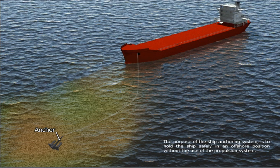Another method of mooring is anchoring. The purpose of the ship anchoring system is to hold the ship safely in an offshore position without the use of the propulsion system. Here is the anchor, anchor chain, and the ship.